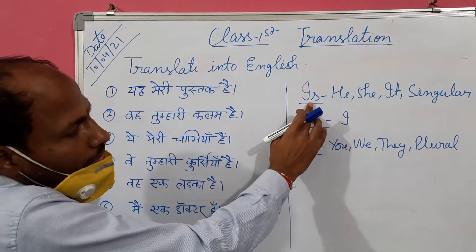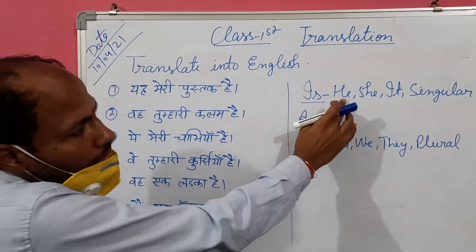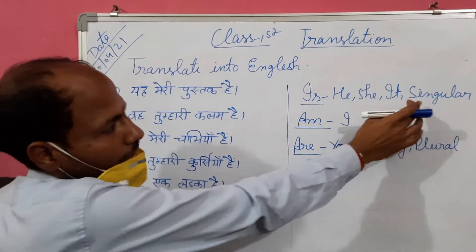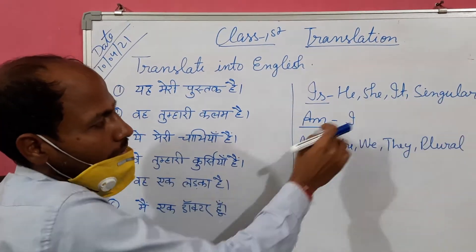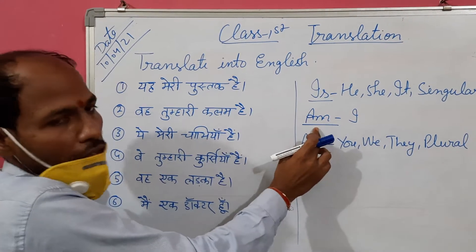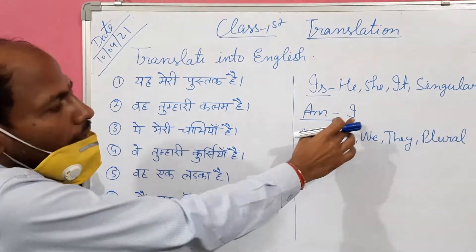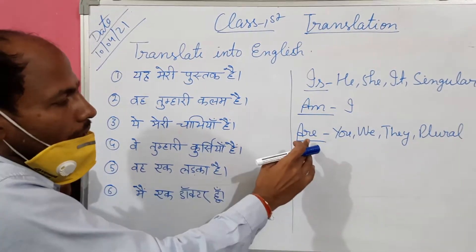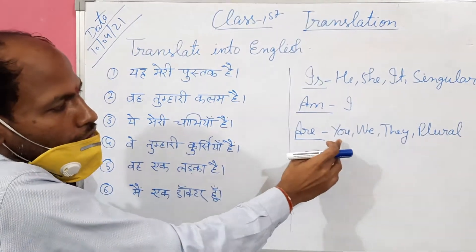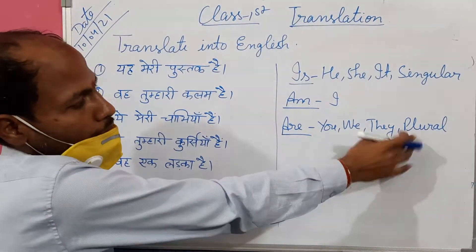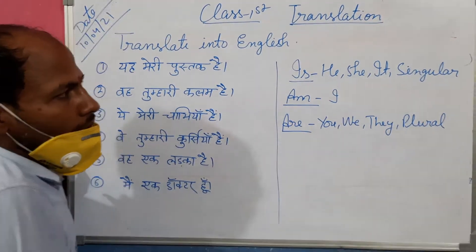It is used with E, C, E and similar subjects. M is used with I, and R is used with U, V — they are similar subjects.